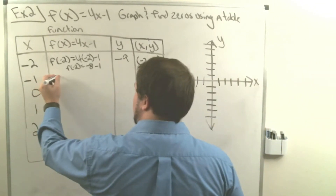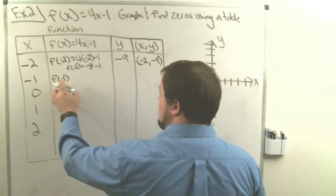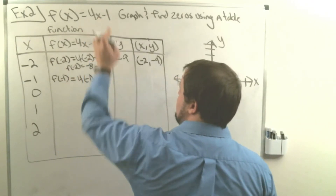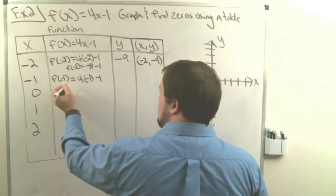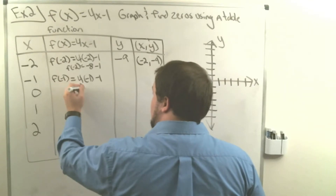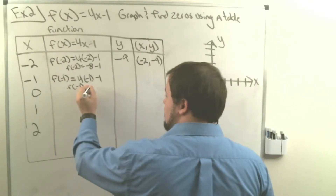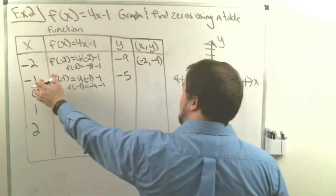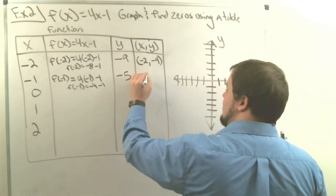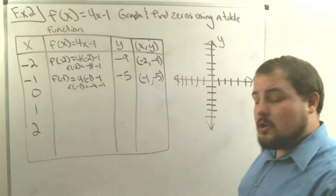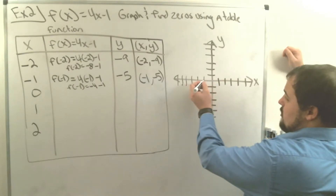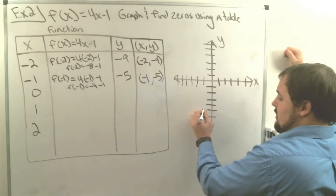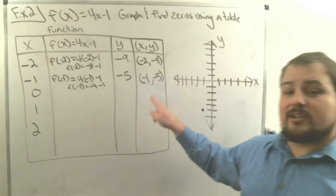Next, f of negative 1 equals 4 times negative 1 minus 1. Four times negative 1 is negative 4, and negative 4 minus 1 is negative 5. So when we plug in negative 1, we get negative 5. Our coordinate pair is negative 1, negative 5. That's something we can graph. We go to negative 1 on the x-axis, then go down to negative 5 on the y-axis and put a point.